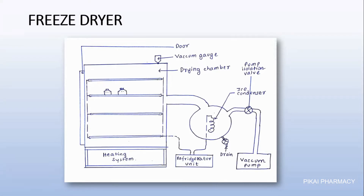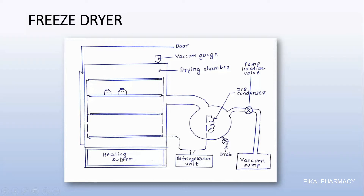Here comes the diagrammatic representation of the freeze dryer. First there is a door; when we open the door we will see some plates stacked upon one another on which we can place our samples. These plates are perforated. At the base of this drying chamber there is a heating system which releases hot air, and there is a fan rotating here which circulates the hot air uniformly inside the chamber.